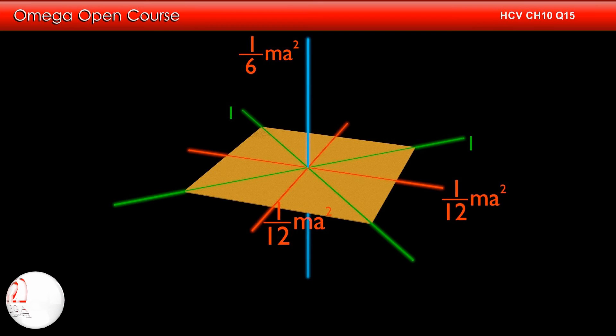But in a square, two diagonals are perpendicular to each other. Thus, as per the perpendicular axis theorem, the moment of inertia about the perpendicular axis must be 2i. This implies 2i must be equal to 1 by 6 ma square or i must be equal to 1 by 12 ma square. This is our answer.